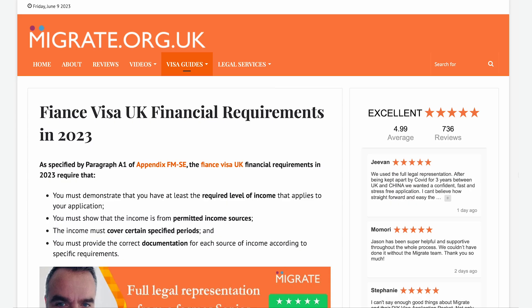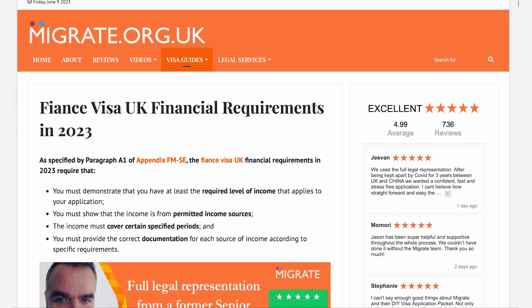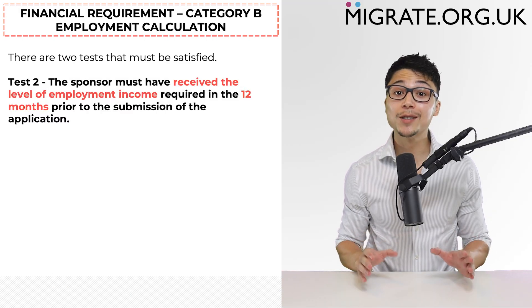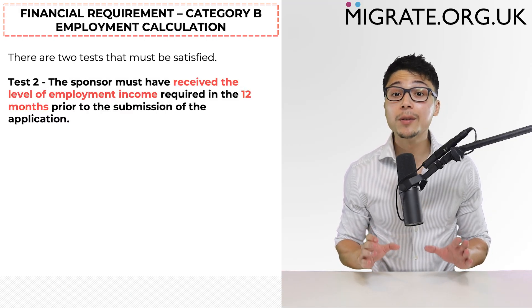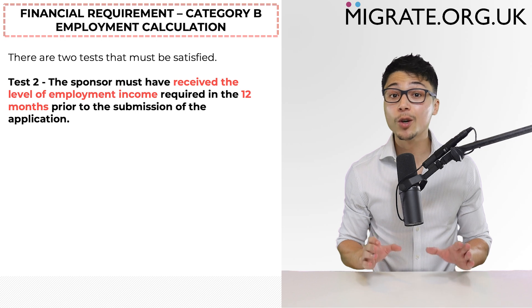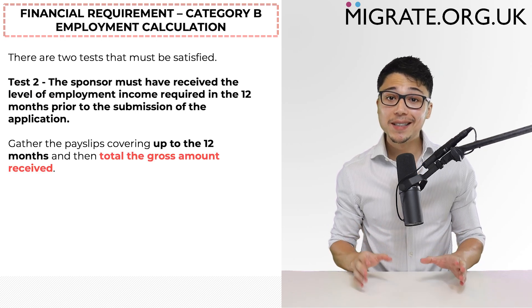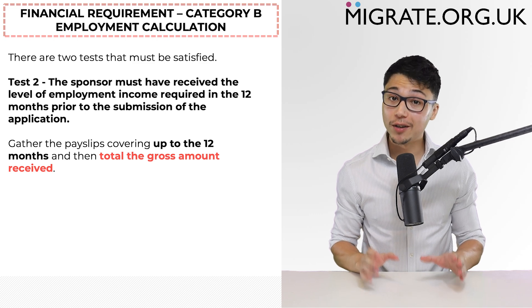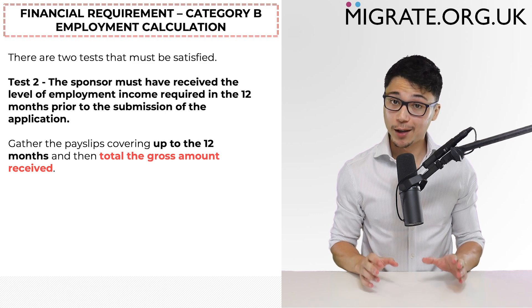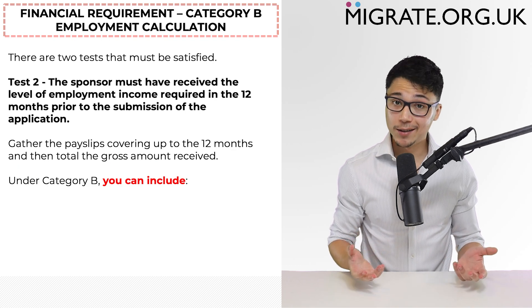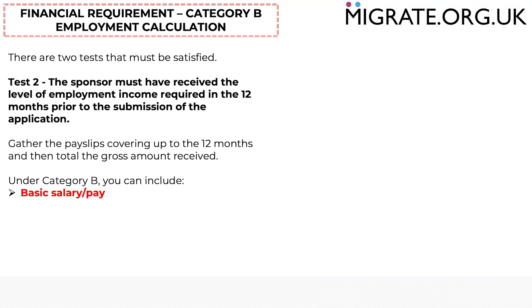As discussed in our in-depth financial requirements article on our website migrate.org.uk, you can combine cash savings as well as other sources of income with part 1 here. The second test requires the sponsor to have received the level of employment income required in the 12 months prior to submitting the application. So gather the payslips covering up to the 12 months prior to submitting the application, and then total the gross amounts received.